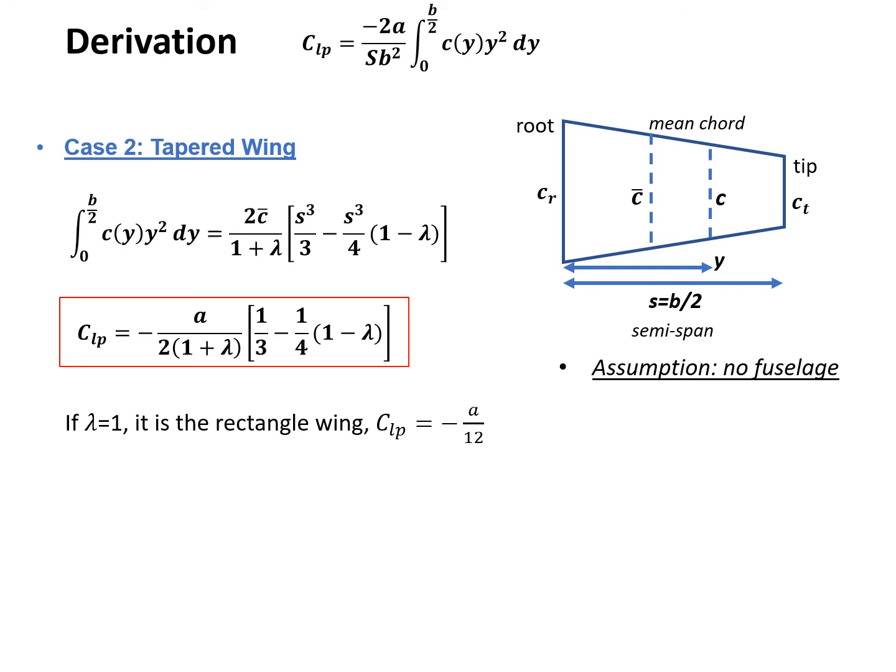This is what we are for the CLP derivation and discussion. Remember CLP is always negative, and the way we do the derivation is the so-called incremental method, where we look at the incremental section on the wing. Those are the two important points of this parameter.